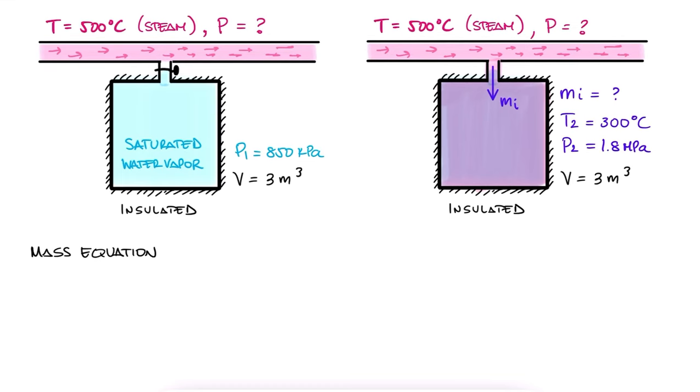From the mass balance equation, we know that the change in mass inside the tank is the final mass minus what was already in there, or in other words, that the mass that went into the tank is the difference between the final and the initial mass. Since the volume of the tank is constant, we can find mass 1 and mass 2 by dividing that given volume by the specific volume at the initial and final conditions.